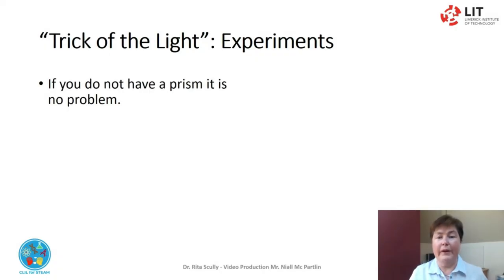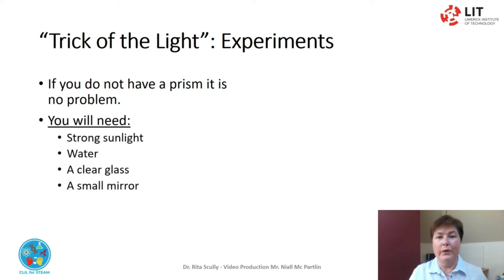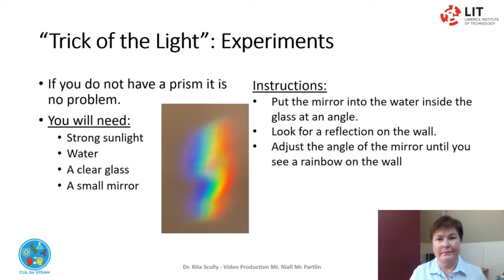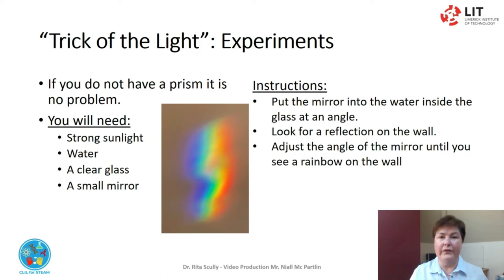If you do not have a prism, it is no problem. We will go through another experiment where a prism is not required. You will need strong sunlight, water, a clear glass and a small mirror. Put the mirror into the water inside the glass at an angle. Look for a reflection on the wall. Adjust the angle of the mirror to the sunlight until you see a rainbow on the wall. With this type of rainbow experiment, there is more distortion because of using the mirror and water, but you will still see the spectrum of light: red, orange, yellow, green, blue, indigo and violet.